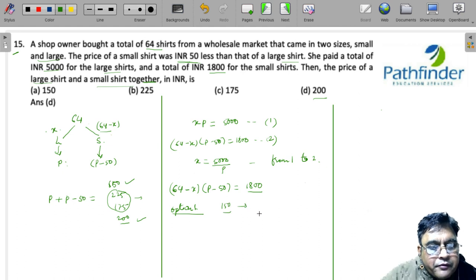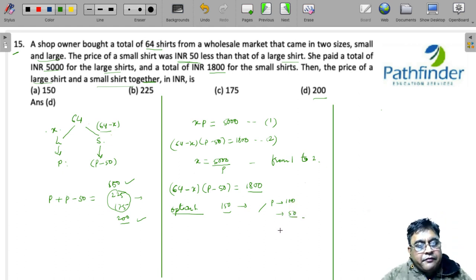Which means the price of the larger shirt is 100 and price of the smaller shirt is 50. And we are told that X into P is 5000, and we already get the value of P as 100, so 100 into X must be 5000, which means X must be 50.